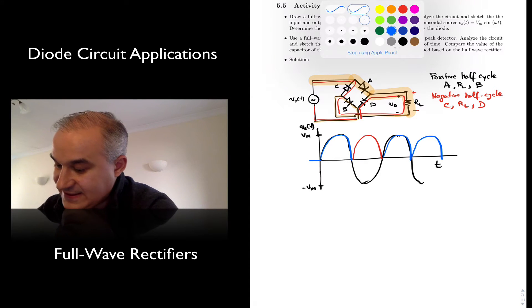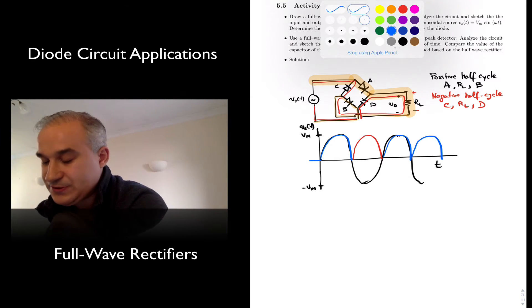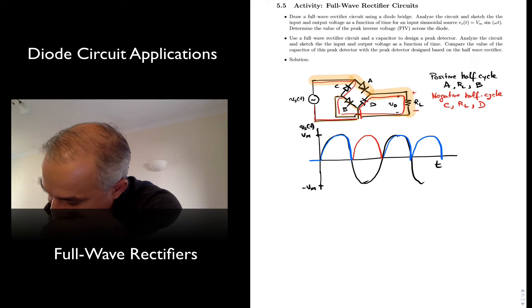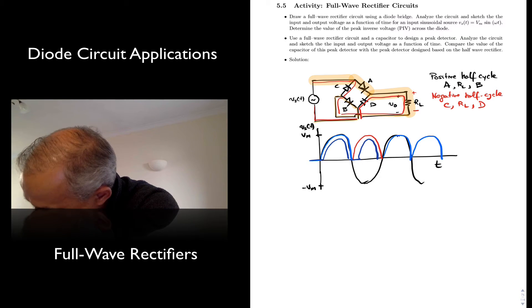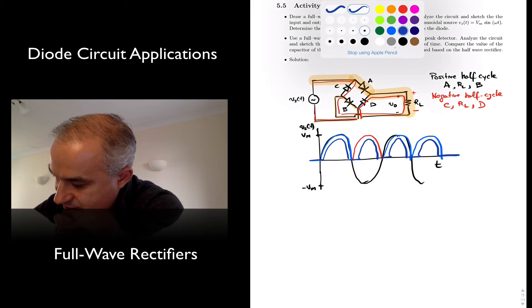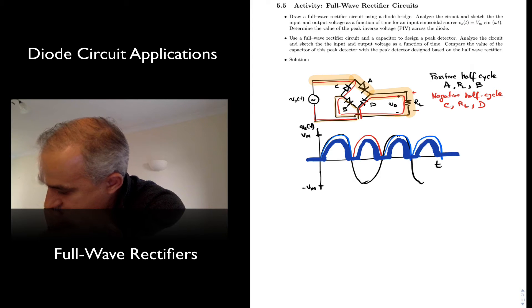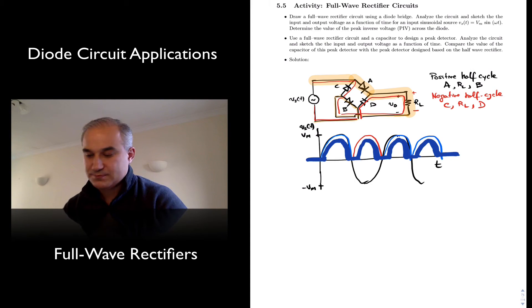Now, this is the ideal model if the diode was a closed switch. In reality, what we have is two diode drops. So it actually looks something like this. Let me get a little bit thicker. Full wave rectification.